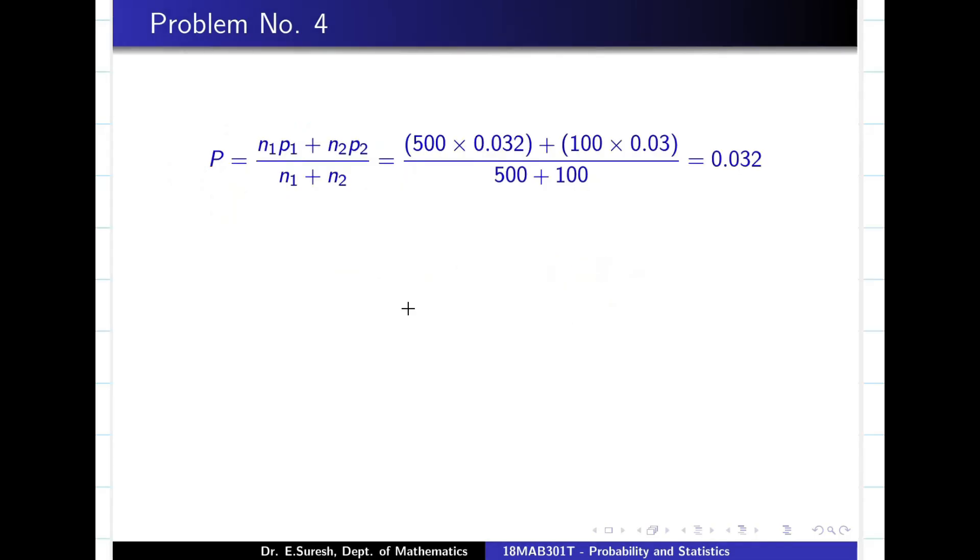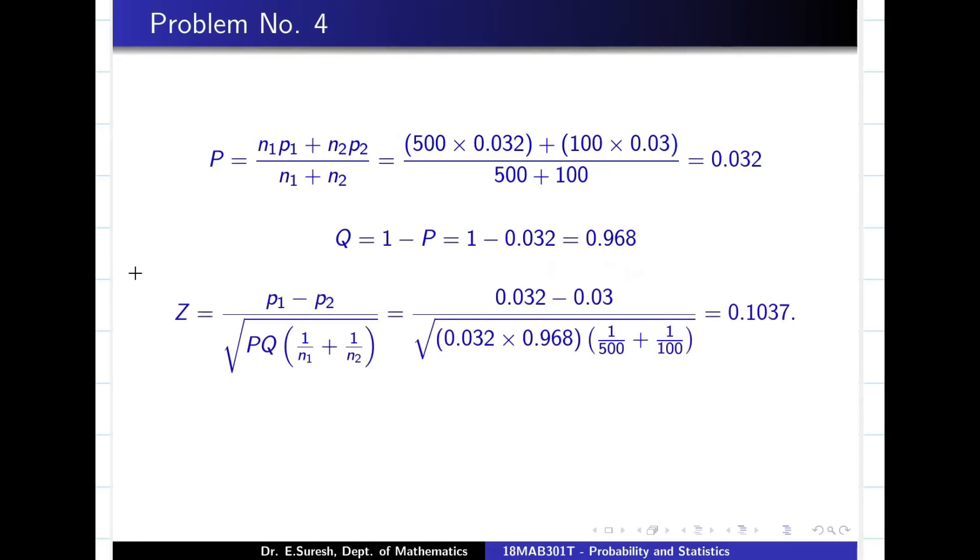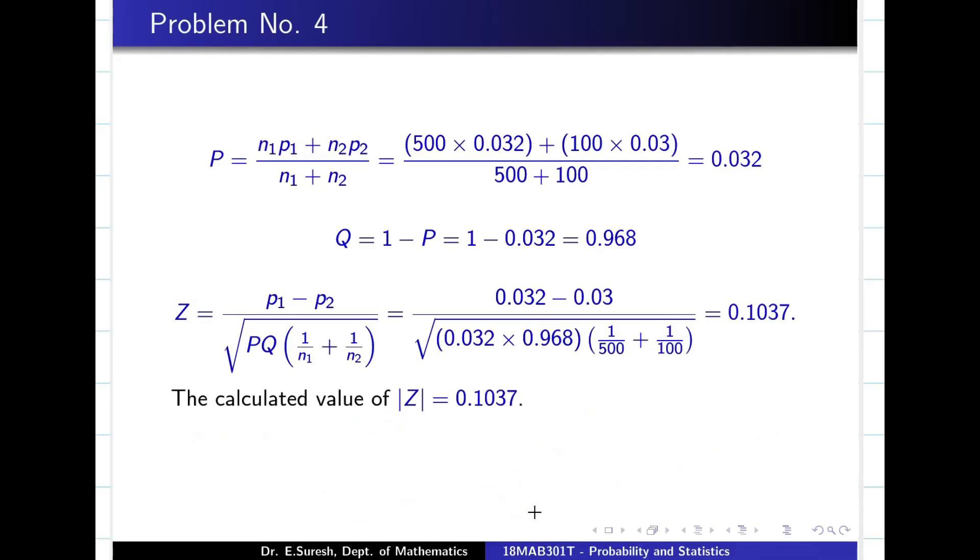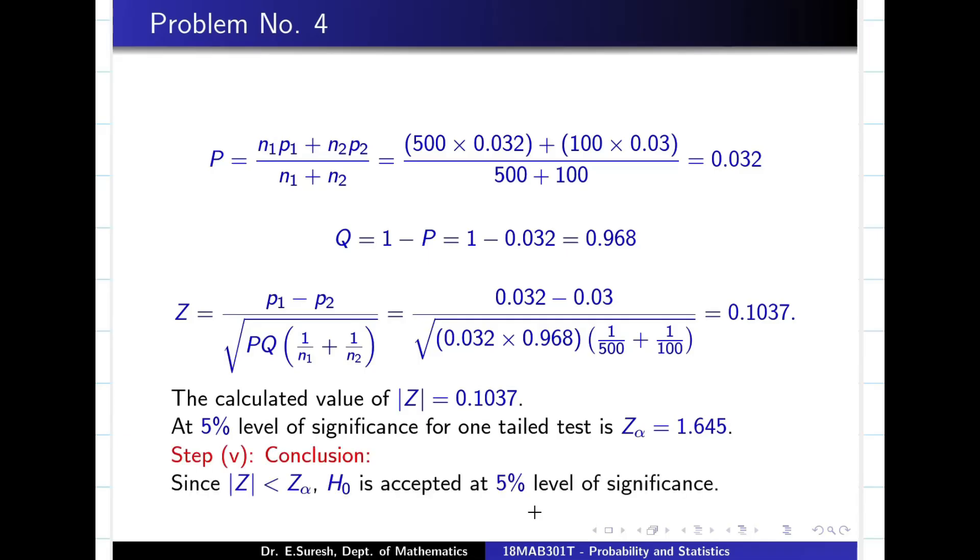After this, for the computation, find capital P, find capital Q, substitute the values in Z. And always take mod Z value, it is going to be 1.037. My Z alpha value is going to be 1.645. So it is obvious, my calculated value is lesser, I am in safer side. H naught acceptable. That means we can say the performance of the machine before overhaul or after overhauling are same. You have to mention the conclusion in wordings at the end of your problem.